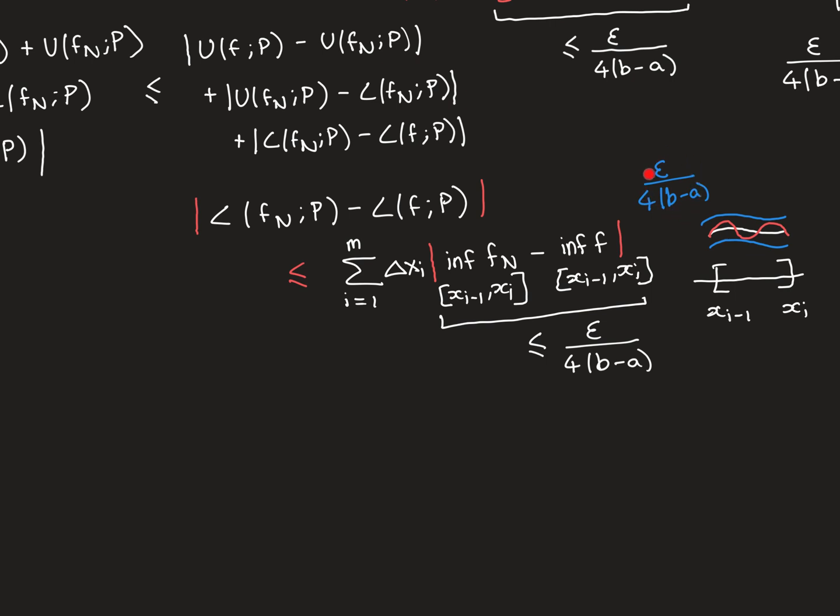In particular, the pointwise difference can never be greater than or equal to ε over 4(b − a) — it must always be strictly less. But it doesn't remain strictly less when we consider the difference between the two infimums, because infimums are not minimums. You don't have to obtain the infimum for it to be called an infimum. So you can actually end up with examples where the two infimums end up exactly ε over 4(b − a) apart — the same kind of counterexample I gave you when discussing the supremum case.